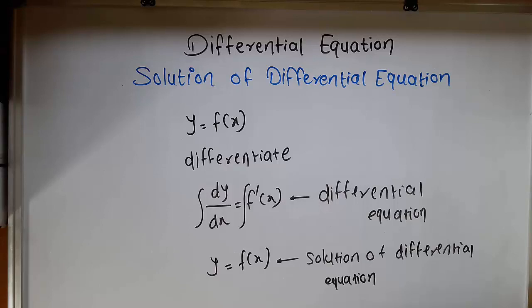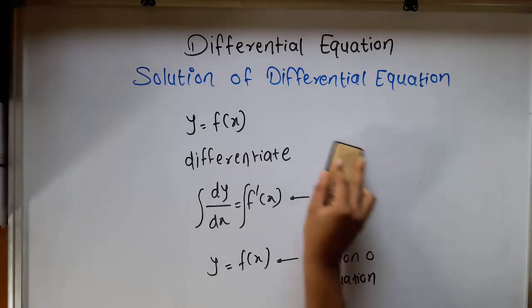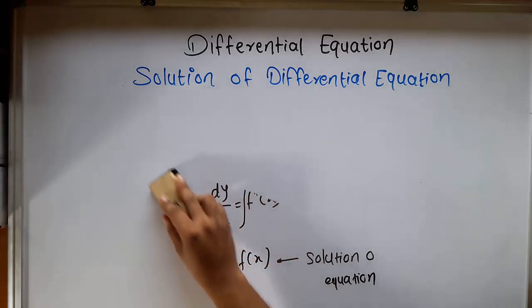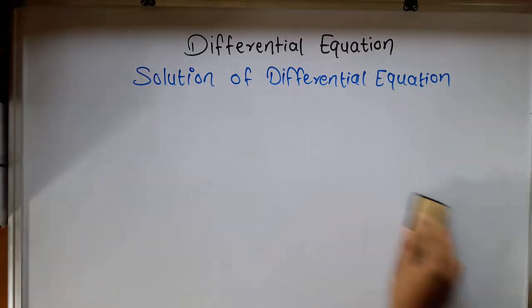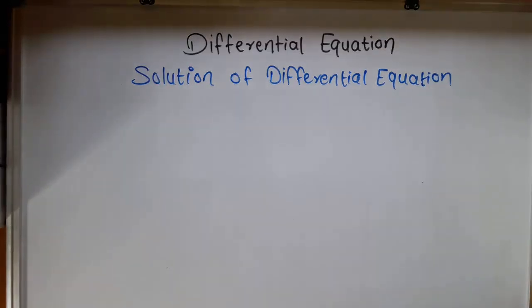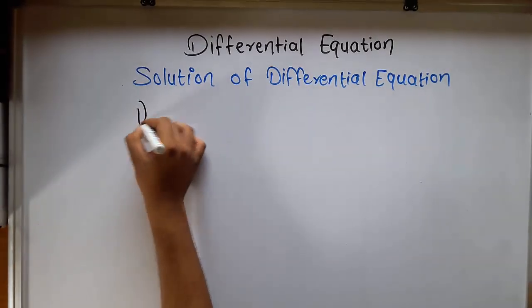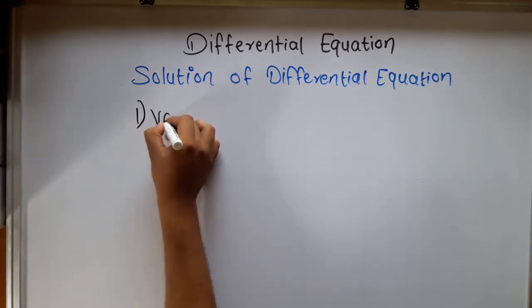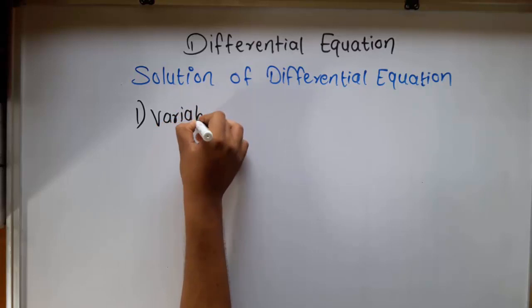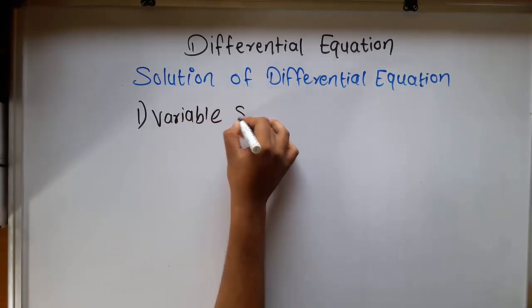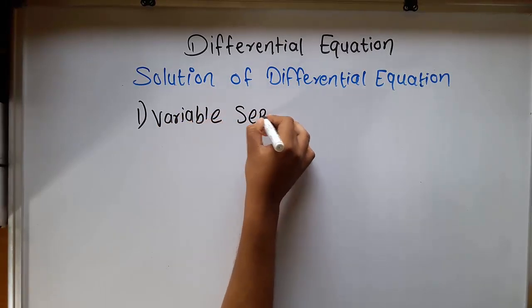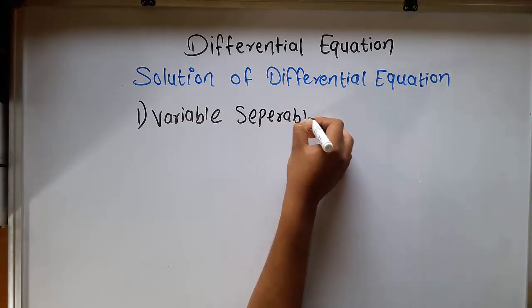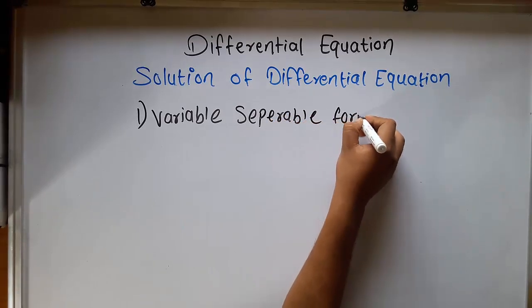There are six methods to find the solution of the differential equation. Today we study the first one, that is the variable separable form.